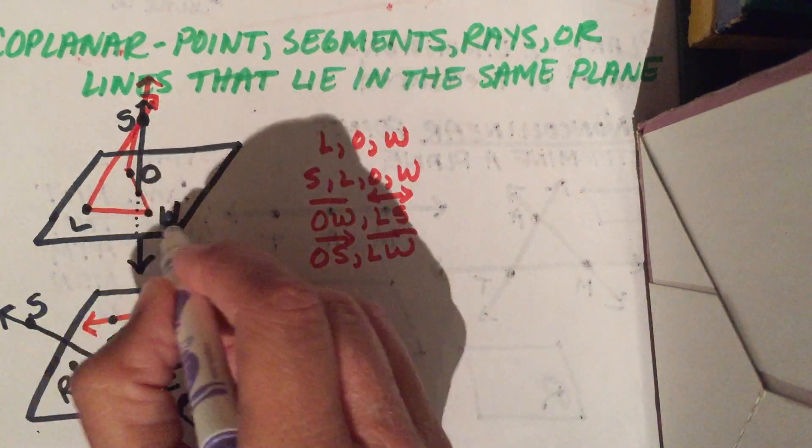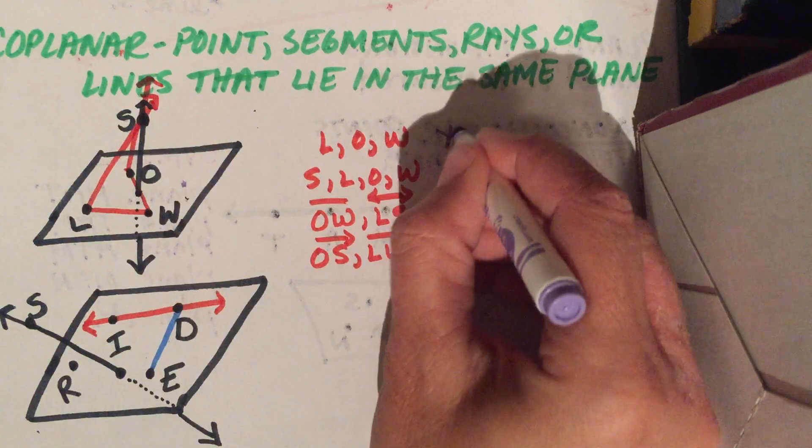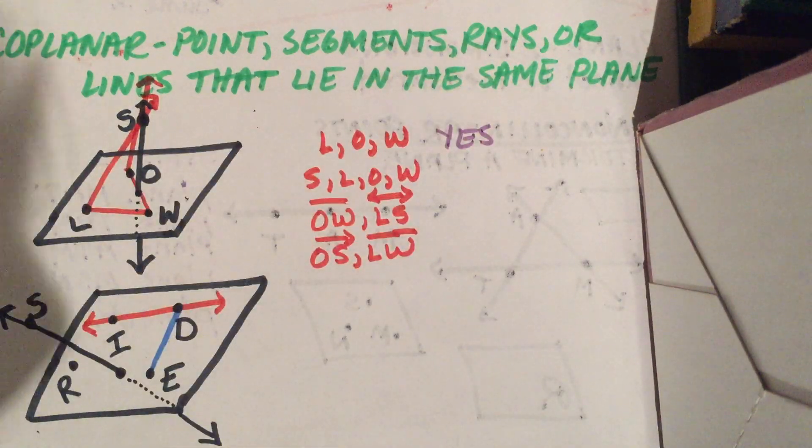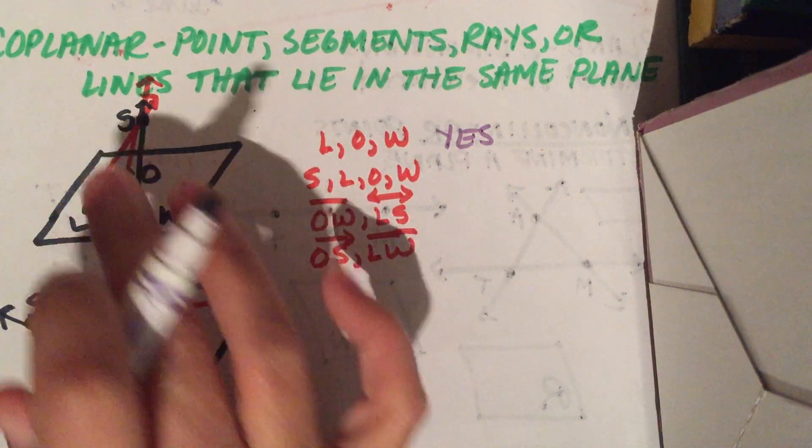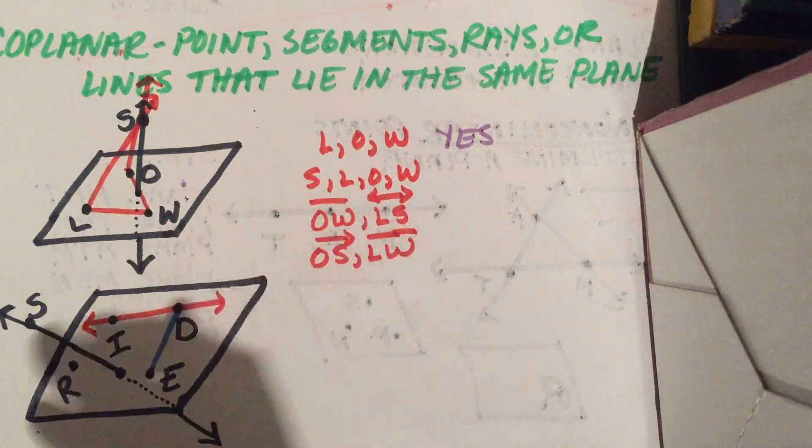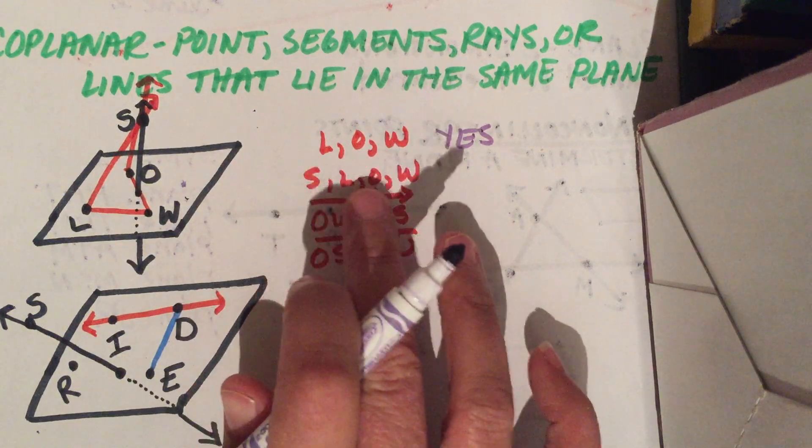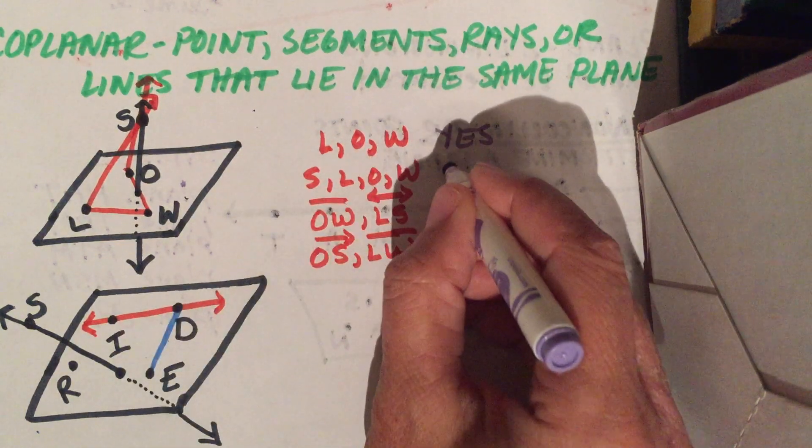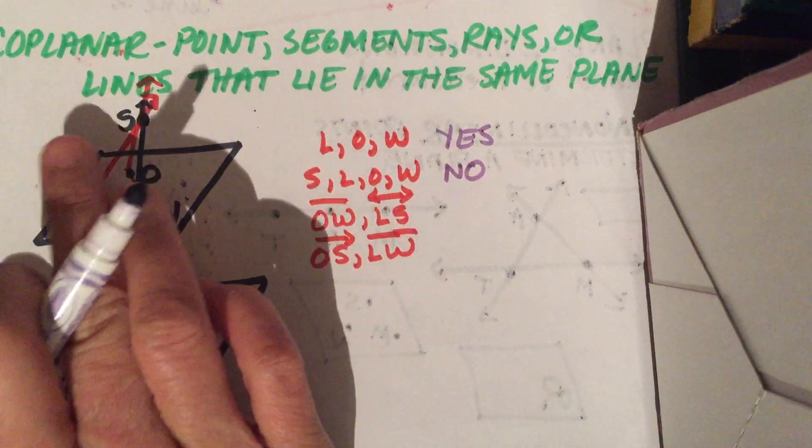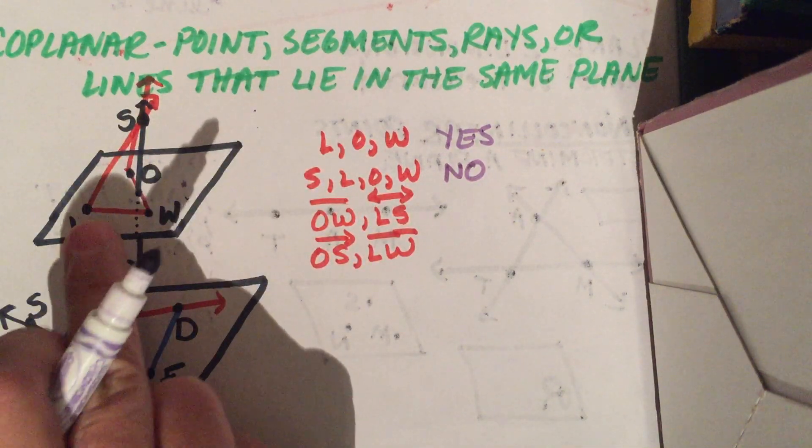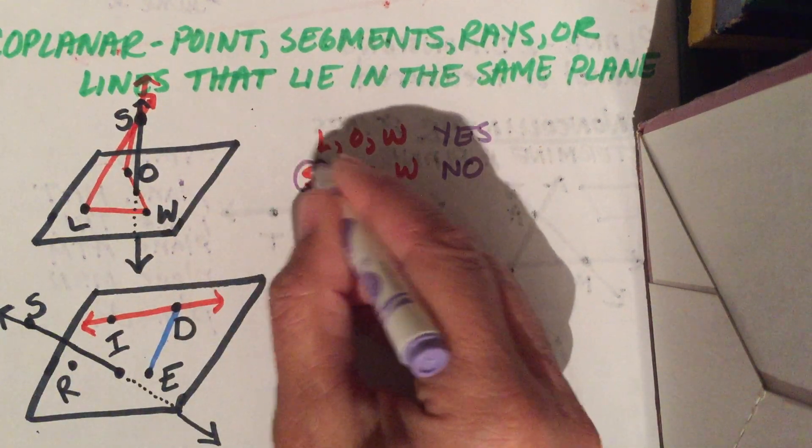Are L, O, and W all coplanar? That answer is yes. Remember, any three non-collinear points will always form a plane. So if I give you three points and they're non-collinear, they're automatically in the same plane. How about S, L, O, W? No, they are not coplanar. They are non-coplanar because the S is not in the same plane with L, O, and W.